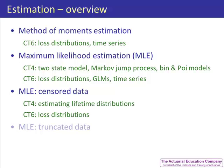The fourth unit, maximum likelihood estimation with truncated data, involves estimating the parameters where we have no sample values from part of the distribution. Again we will use this in subject CT6 to estimate the parameters of loss distributions.